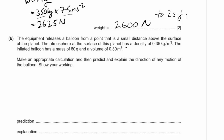Part B: the equipment releases a balloon. The atmosphere at the surface has a density of 0.35 kg/m³. The inflated balloon has a mass of 80 grams and a volume of 0.3 m³. We need to use Archimedes' principle: if the balloon's density is less than the atmosphere's, it rises; if greater, it sinks.